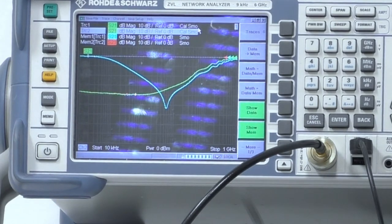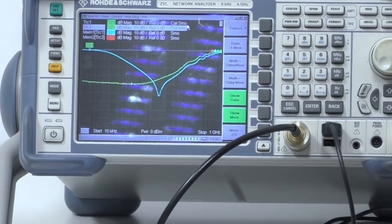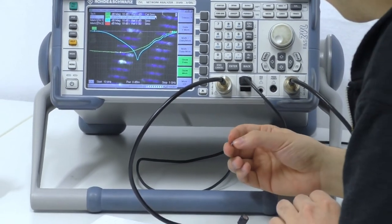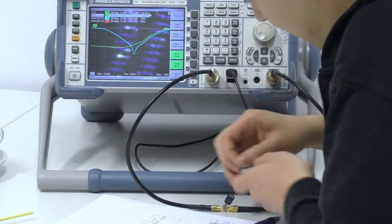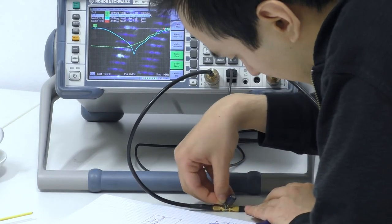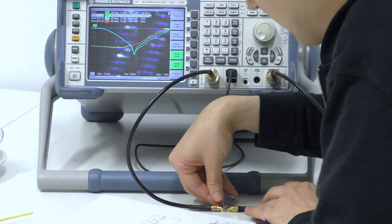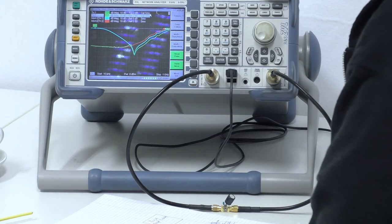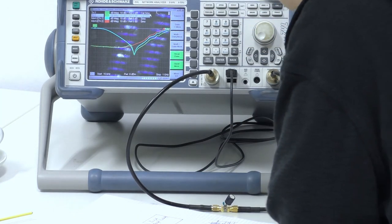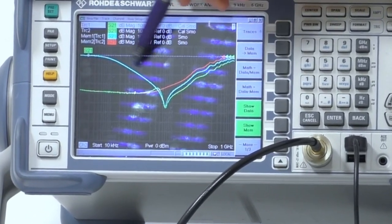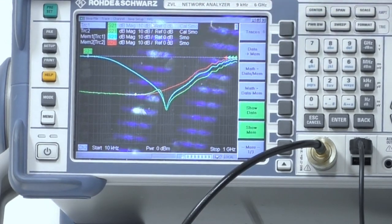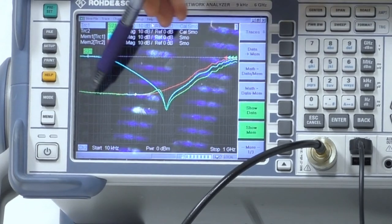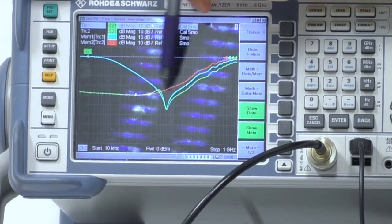And now things become interesting when we are now parallel connecting our electrolytic capacitor with our decoupling capacitor. So the common placement in front of an IC. And this is now here the green line. So the light blue one is once again our decoupling capacitor. The red one is our electrolytic capacitor. And the green one is now the parallel connection of both.